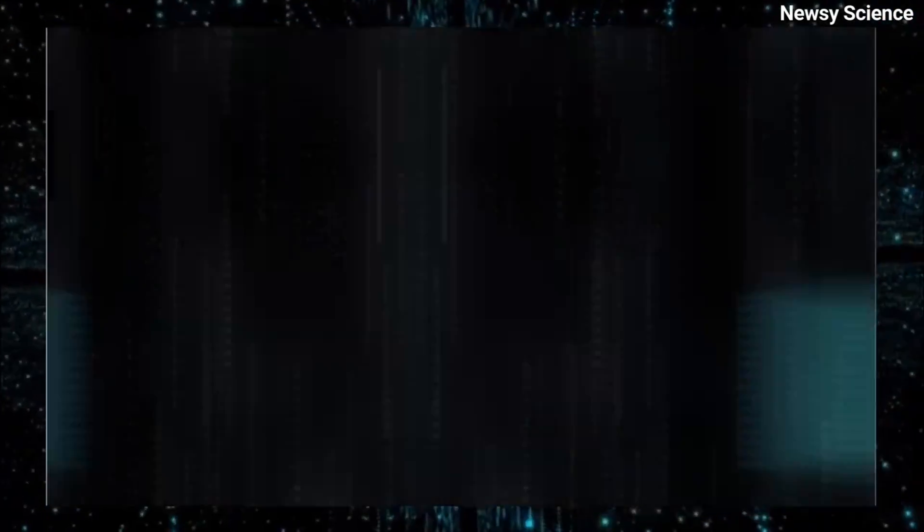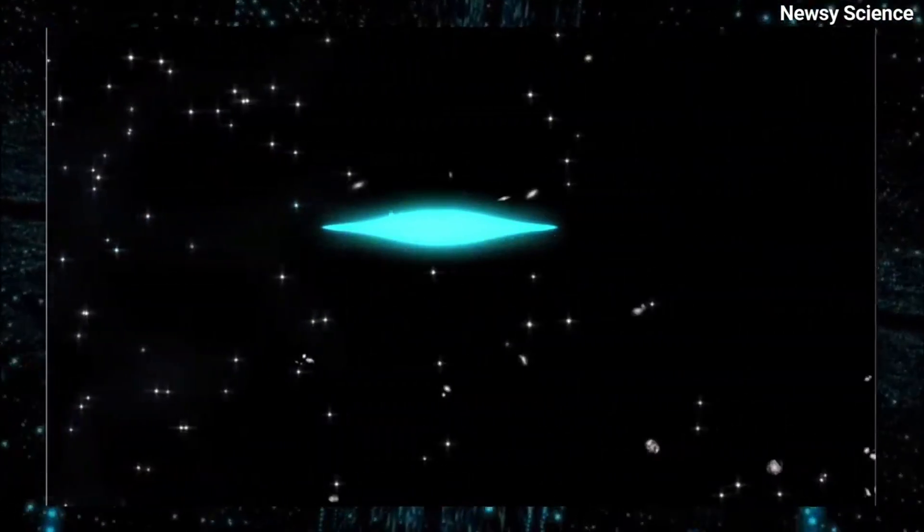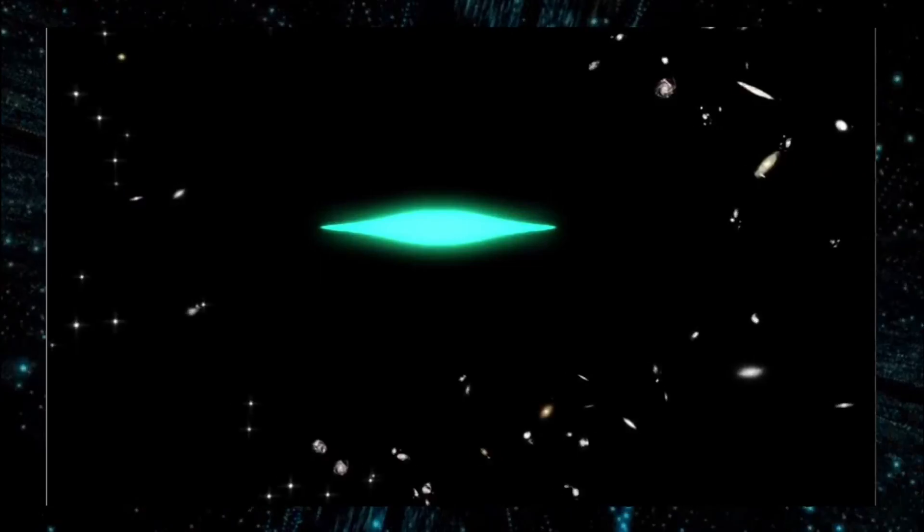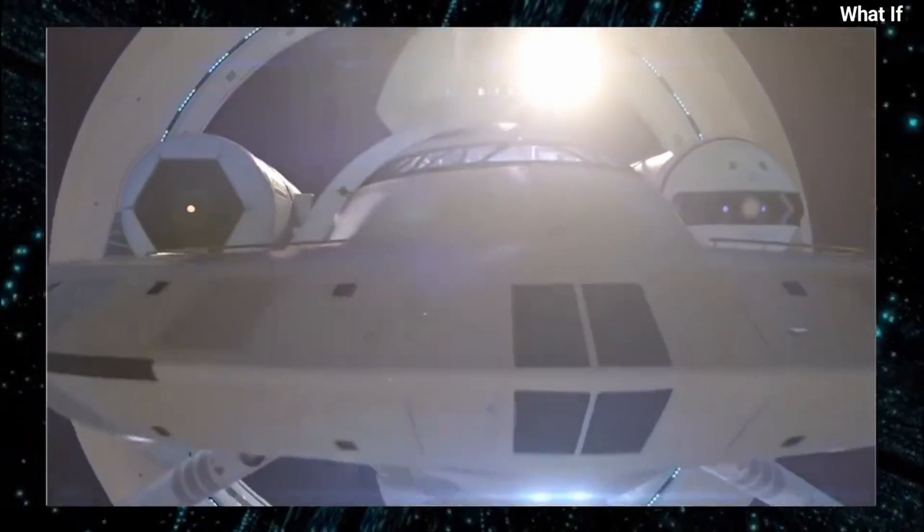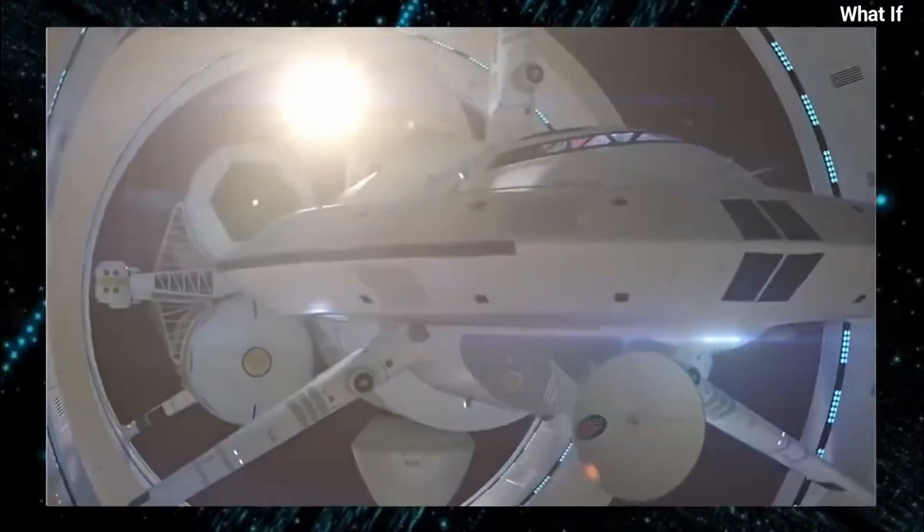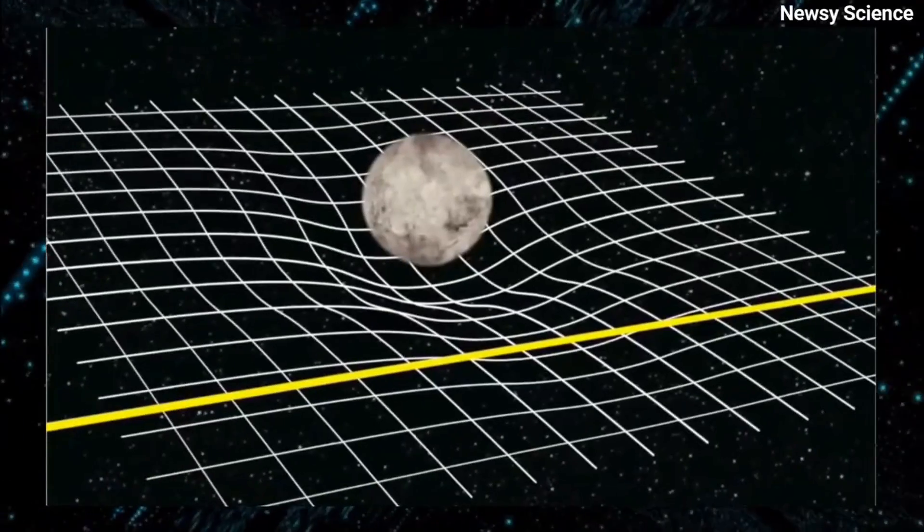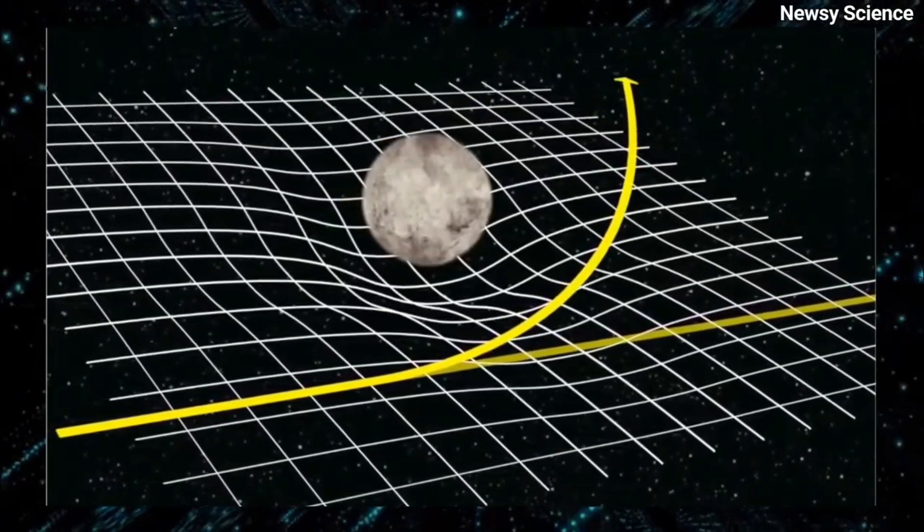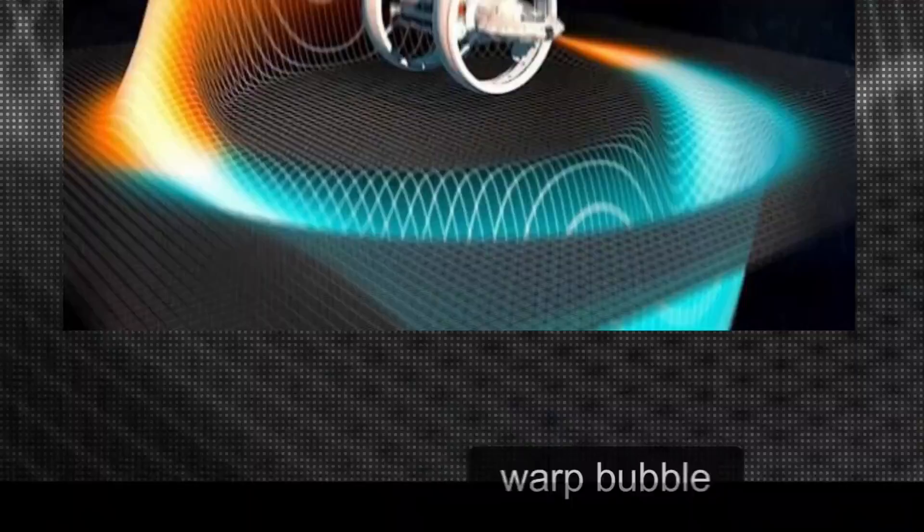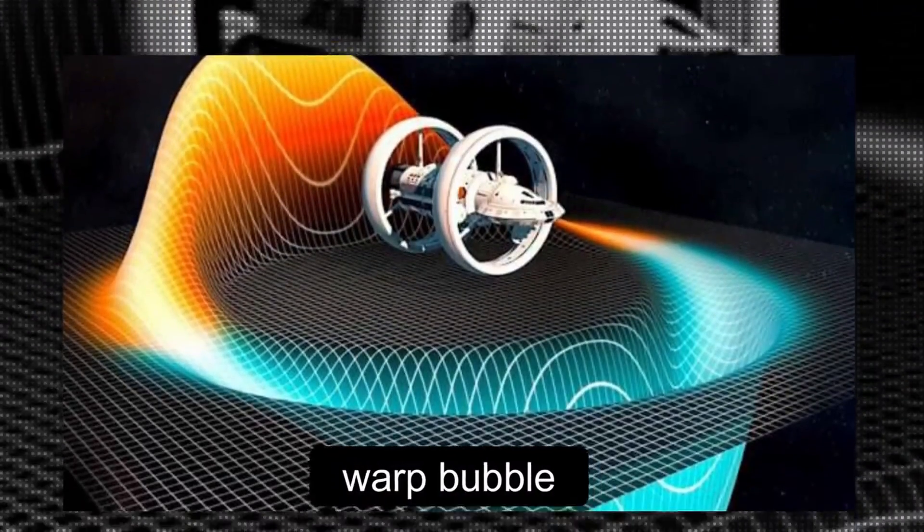The idea behind warp drive is to cause a distortion in the spacetime fabric, allowing a spaceship to travel faster than the speed of light without breaking any physical laws. This distortion is produced by separating a region of spacetime from the normal spacetime fabric. This region is known as a warp bubble, and it allows a spaceship to travel through space without moving.